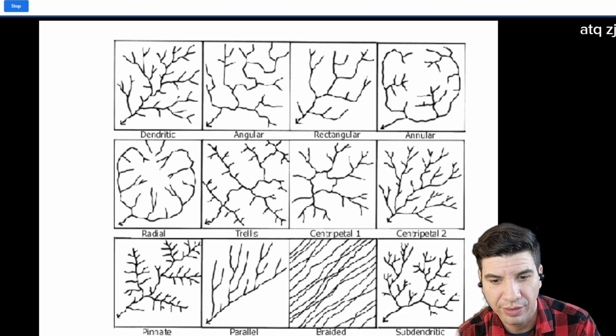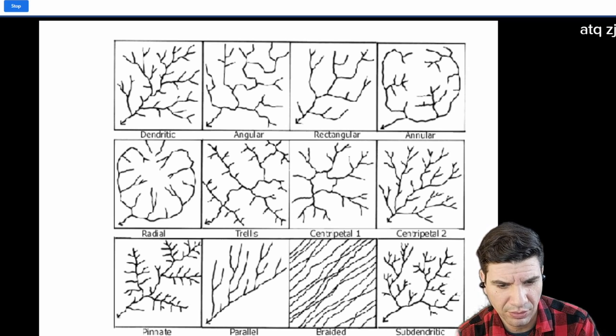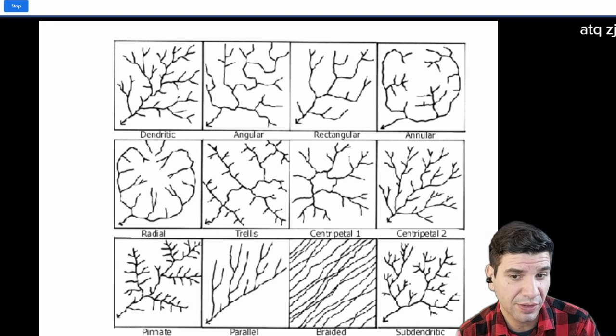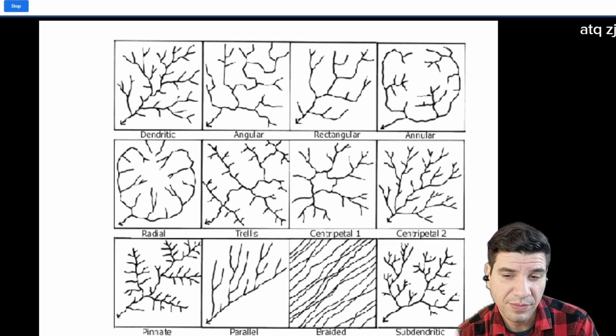Rectangular, annular, radial, trellis. Now, some of these we don't really talk about in this class. Like centripetal, we don't really. Or pinate. But for the most part, I do need you to be aware of dendritic. And that's relatively flat surfaces. Sometimes they show you rectangular. That's broken up bedrock.